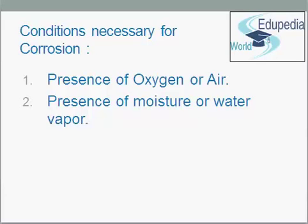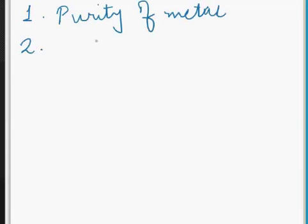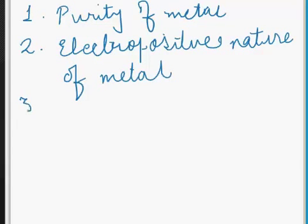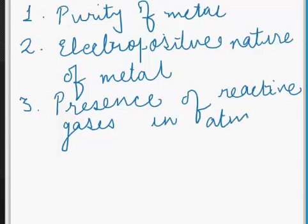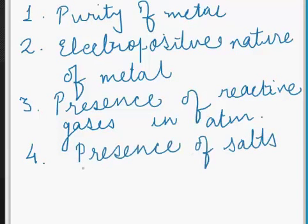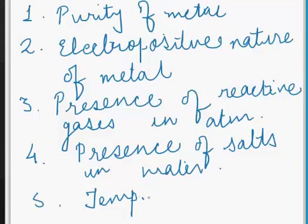The rate of corrosion is influenced by the following factors. First is purity of metal. Second, electropositive nature and temperature of metal. Third is presence of reactive gases in the atmosphere. Fourth is presence of salts in water. Fifth is temperature. These factors influence the rate of corrosion.